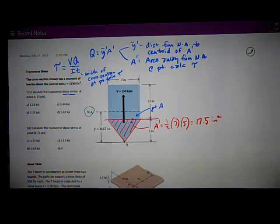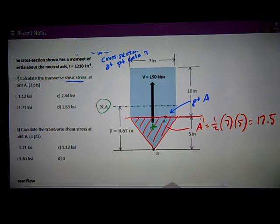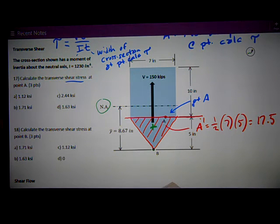So I want to locate the centroid of the triangle, put a little cross there. And then I want to know the distance from the neutral axis to that point, and that is Y bar prime.